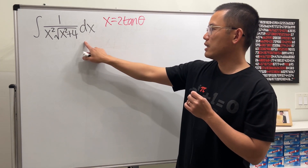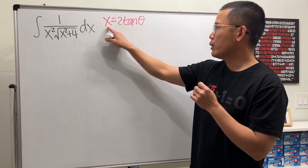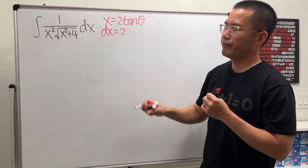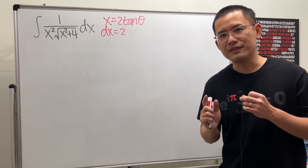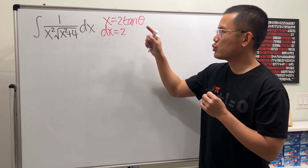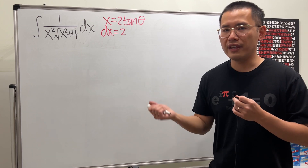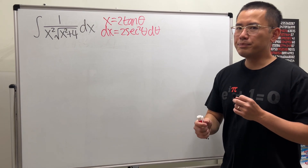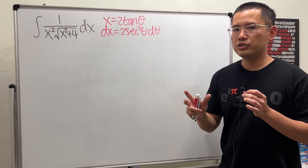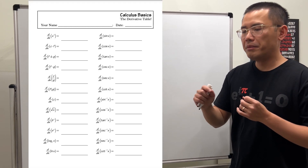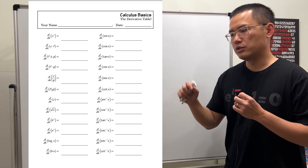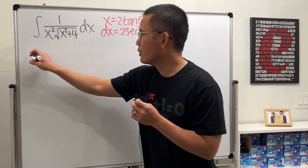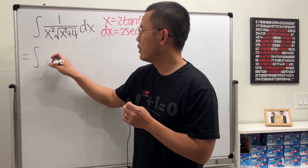We need to get dx, so differentiate both sides. dx equals 2 times the derivative of tangent theta. You have to know your derivatives really well — the derivative of tangent theta is secant squared theta. As a bonus, I'll give you a blank derivative table; make sure you know all the derivatives and go practice them.